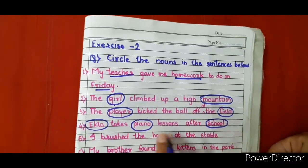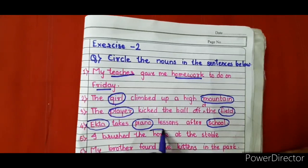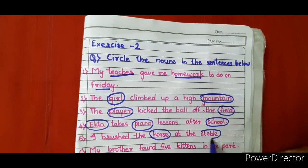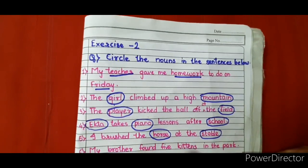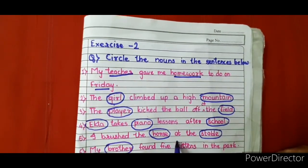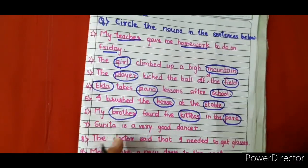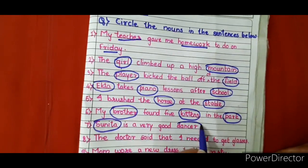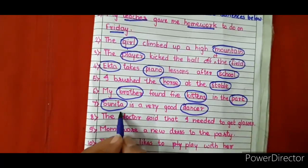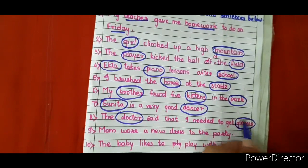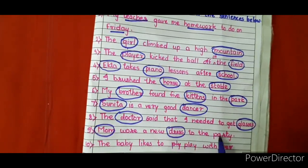Here you have to circle only nouns — it may be any kind of noun. I brushed the horse at the stable — horse and stable. Stable is the house or home for horses where the horses are kept. My brother found five kittens in the park — brother, kittens, park. Sunita is a very good dancer — Sunita and dancer. The doctor said that I needed to get glasses — doctor and glasses. Mom wore a new dress to the party — mom, dress, and party.